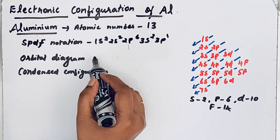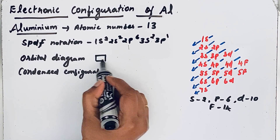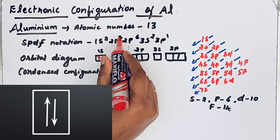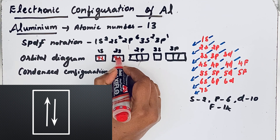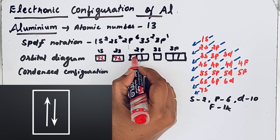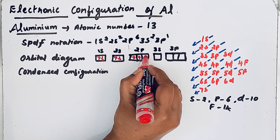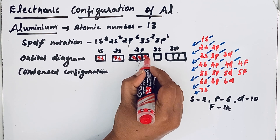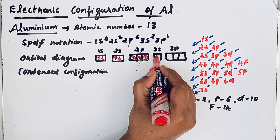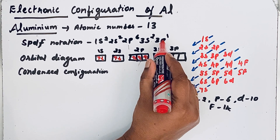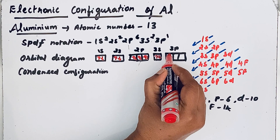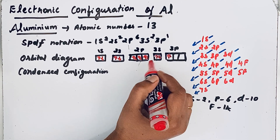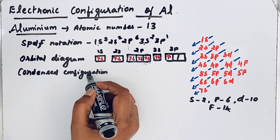In the orbital diagram, 1s has 2 electrons — one with positive spin and one with negative spin. 2s also has 2 electrons — positive and negative spin. 2p has 6 electrons — first all with positive spin, then negative spin. Then 3s has one electron with positive spin, and 3p has one electron with positive spin. This completes the orbital diagram.